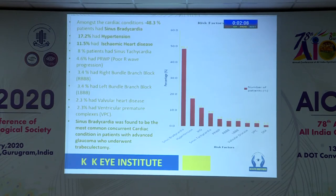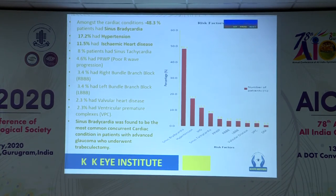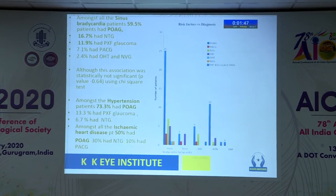Coming to the distribution of cardiac conditions, about 48.3 percent — around 50 percent — of patients had sinus bradycardia, followed by hypertension, followed by IHD, and then by other conditions such as sinus tachycardia, poor RVA progression, bundle branch blocks, valvular heart disease, and VPCs. Sinus bradycardia was found to be the most common concurrent cardiac condition in patients with advanced glaucoma. Among the sinus bradycardia patients, about 60 percent had POAG, followed by NTG and PXF.